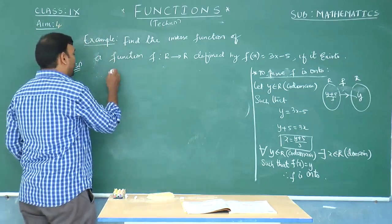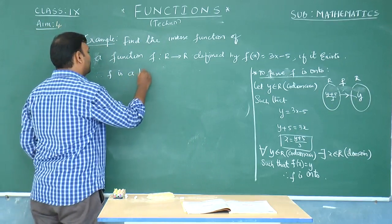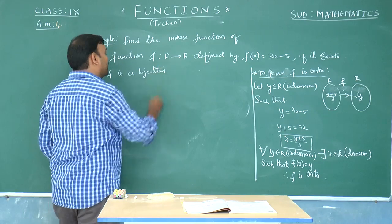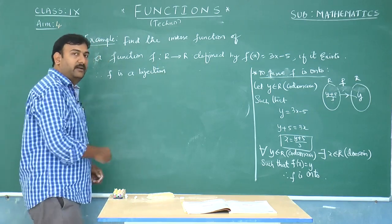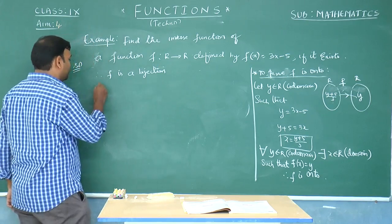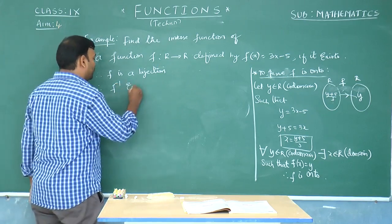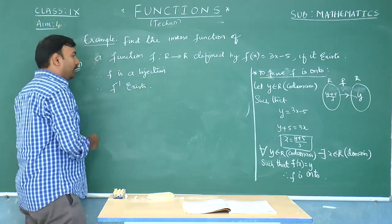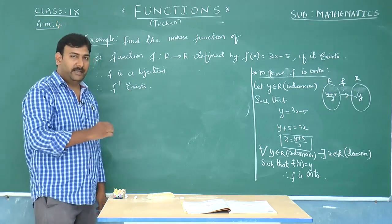Therefore, I can say that f is a bijection. Because f is a bijection, the inverse of a function will become a function — that means the inverse function will exist. Therefore, f inverse exists and it is confirmed that f inverse exists.